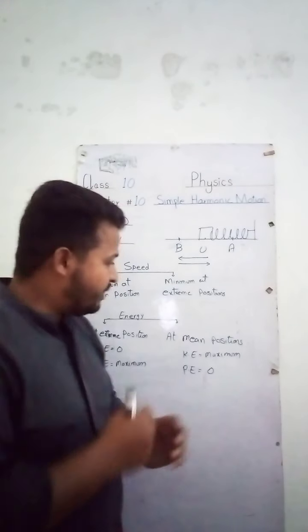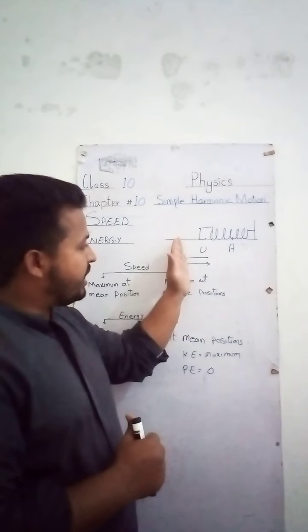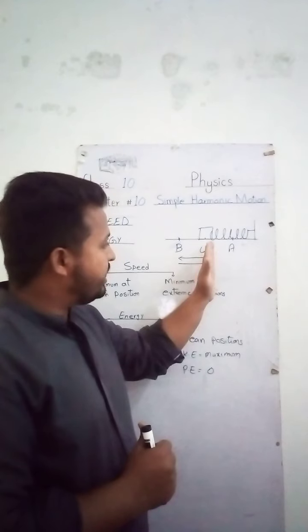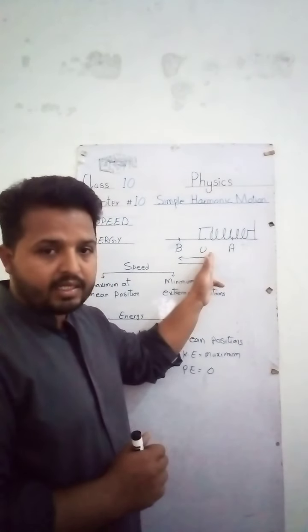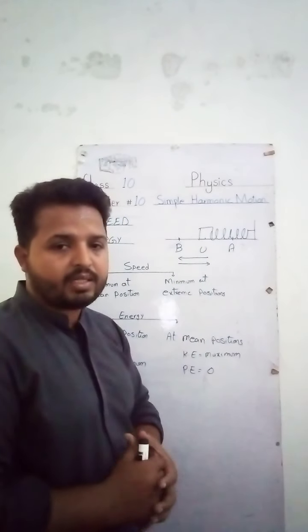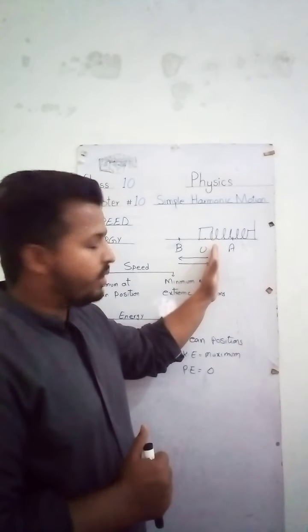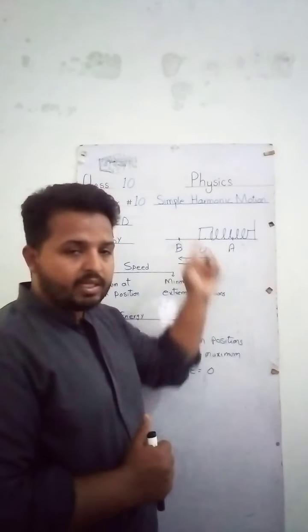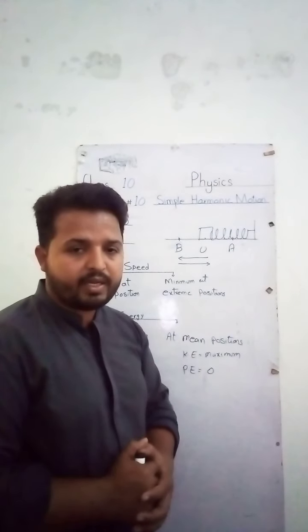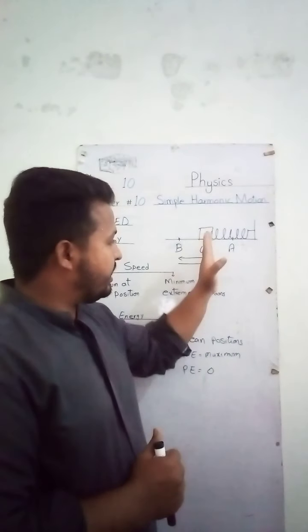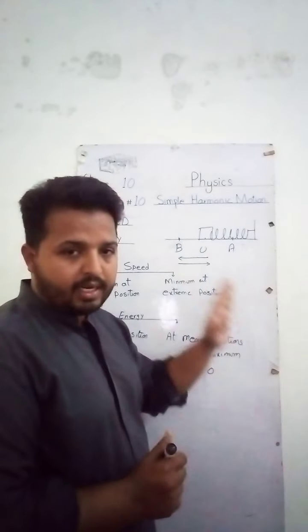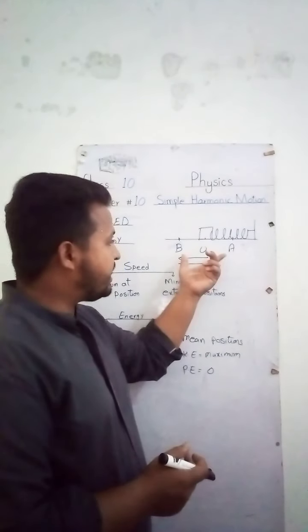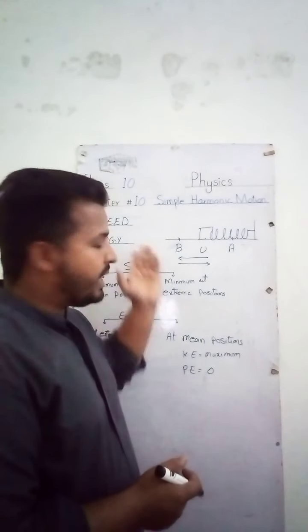Now, energy at the mean position: when the body starts to move towards the mean position using potential energy, that potential energy is consumed and converted into kinetic energy because the body starts to move. At the mean position, the kinetic energy is maximum because the body is moving between positions A and B through mean position O. At the mean position, the spring is in its relaxed form — not stretched or compressed — so potential energy is zero and kinetic energy is maximum.